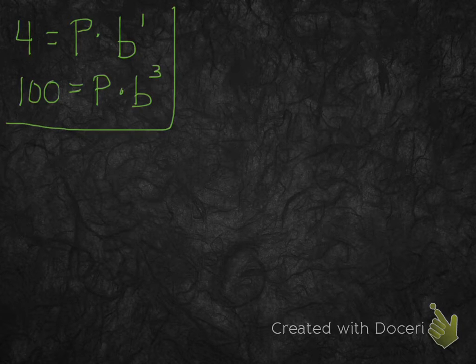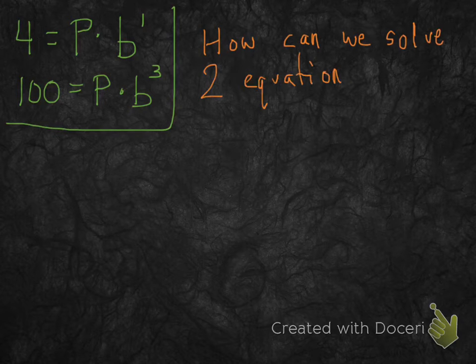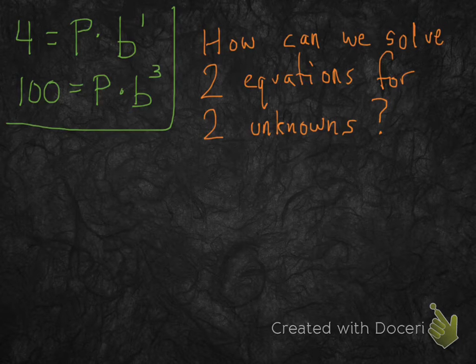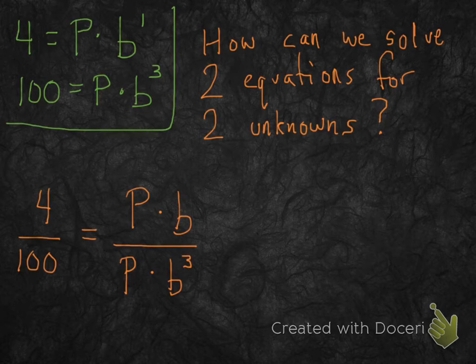So I just rewrote our two equations that we came up with on the last page. Now I want you to try to figure out how we can solve for p and b. We have two equations and two unknowns. Unknowns just mean two letters that we don't know what they are, p and b. But we want to figure out what they are as numbers. Here's the trick. Divide the two equations. Divide both sides. So take 4 divided by 100, and that's equal to p times b, b to the 1 is just b, so I just wrote that as b, divided by p times b cubed.